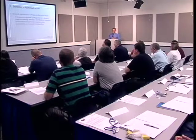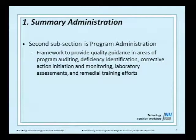The second subsection under summary administration is called program administration. It provides a framework with quality guidance in areas of program auditing, deficiency identification, corrective action initiation and monitoring, laboratory assessments, and remedial training efforts. This is structured similarly to an accreditation program. It gives a strong quality presence so that if there is an issue, there are mechanisms in place to identify it, address it, follow up on it, and document it.